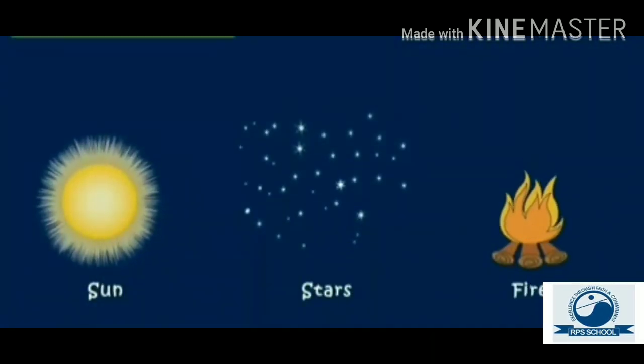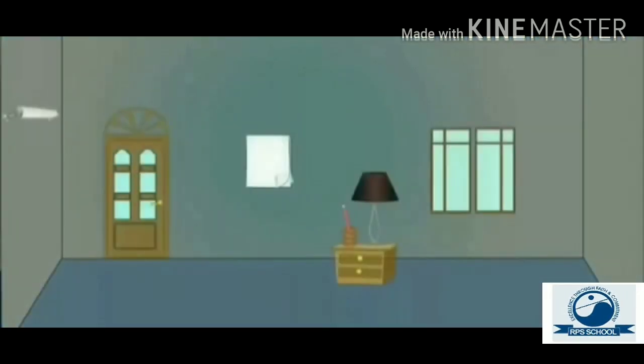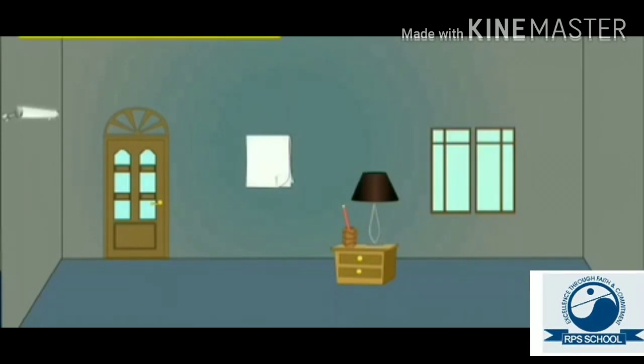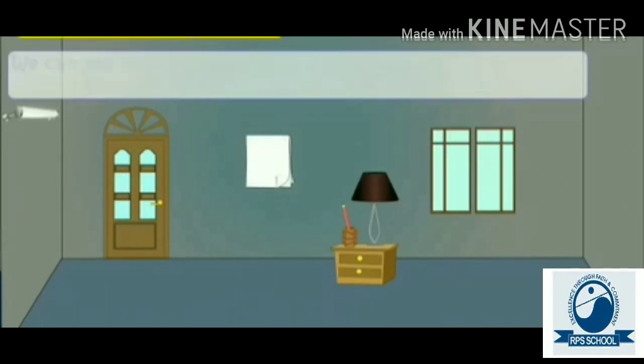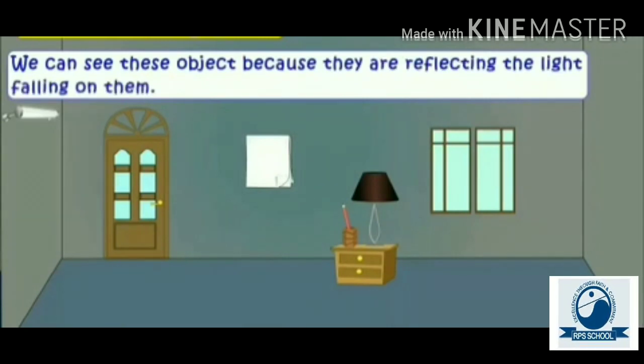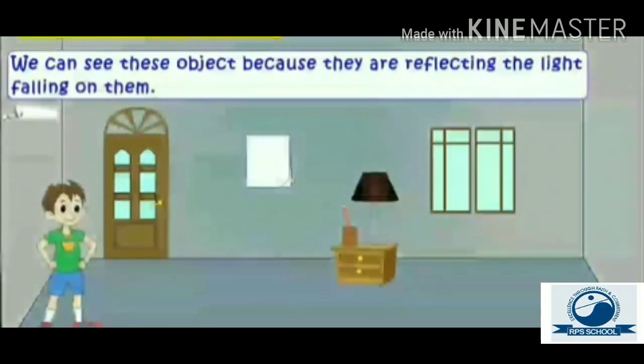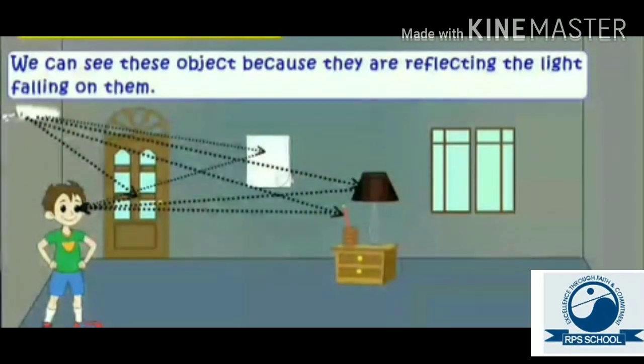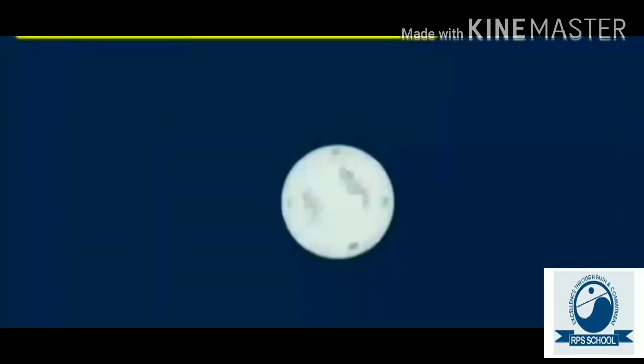We can see these objects are emitting light on their own. So, they are luminous objects. Children, we are able to see them because they are reflecting the light falling on them from other luminous sources.